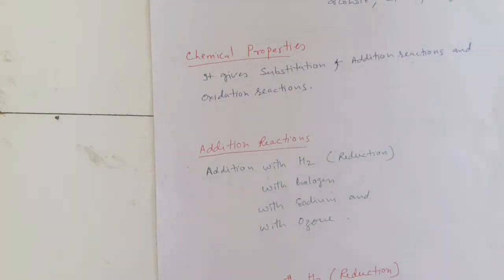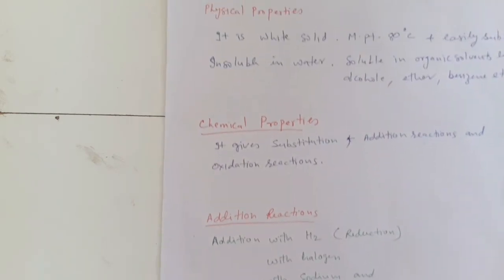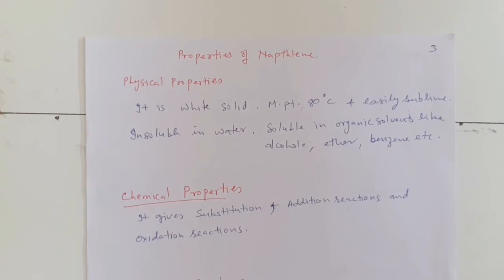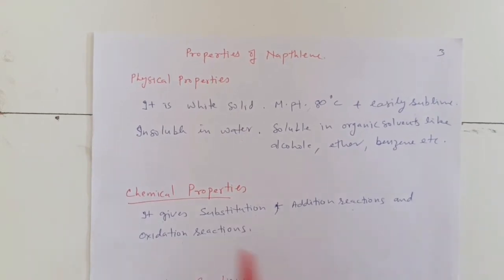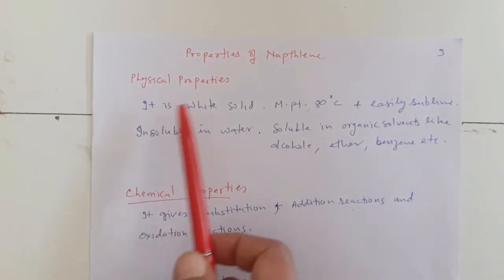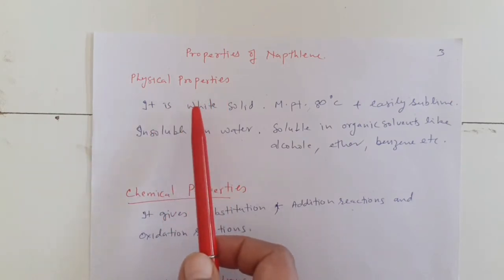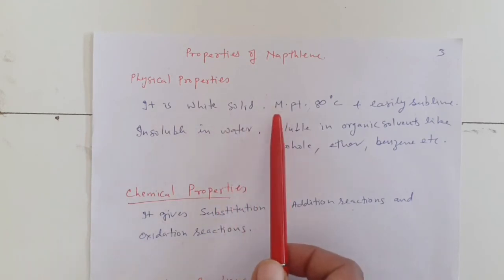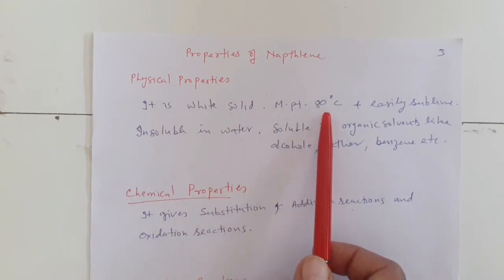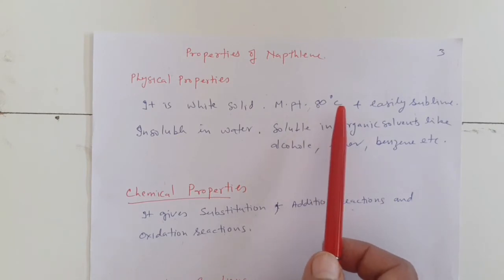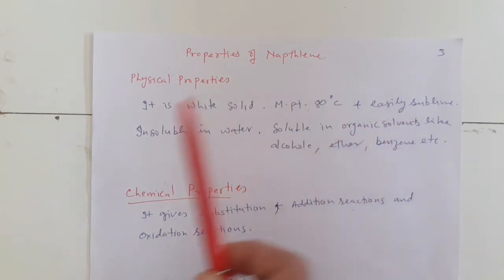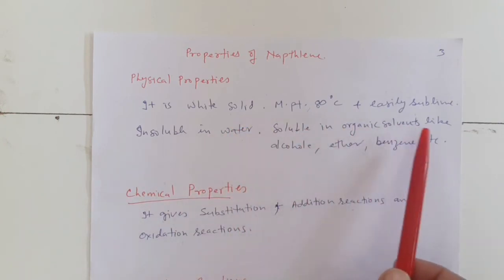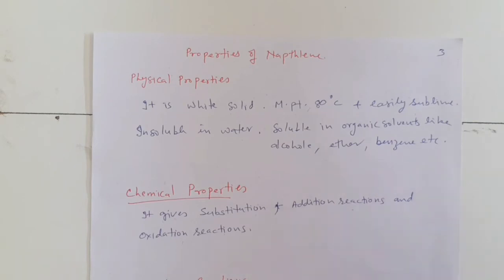Now we study the properties of naphthalene. The physical properties of naphthalene: we have seen naphthalene in our houses and we know it is a white solid with a melting point of 80 degrees centigrade. By heating it easily sublimes. It is insoluble in water but soluble in organic solvents like alcohol, ether, benzene, etc.